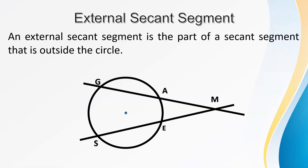Before proceeding to the theorem, let's identify first what an external secant segment is. An external secant segment is the part of a secant segment that is outside the circle. Line GM is an example of a secant line. The external secant segment is the segment AM. For the secant line SM, the external secant segment is line segment EM or ME because it's part of the secant line that is outside the circle.